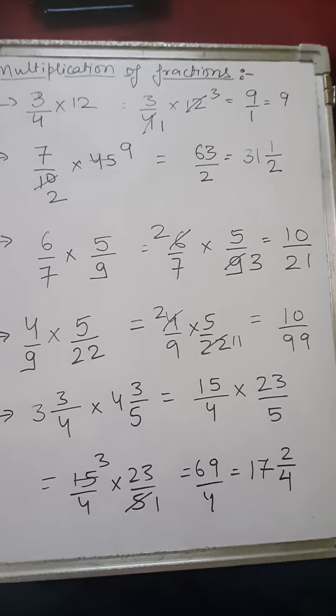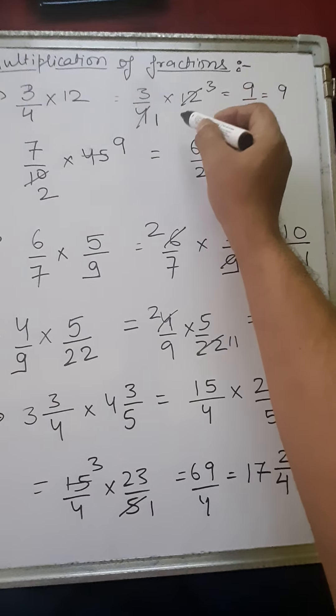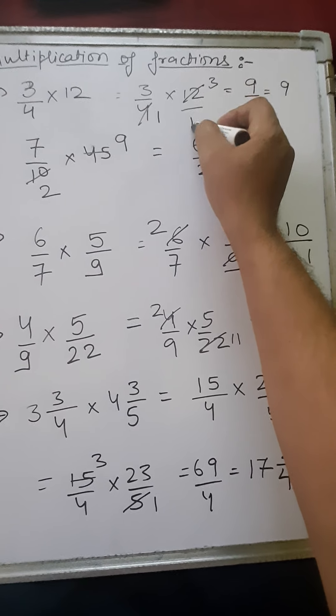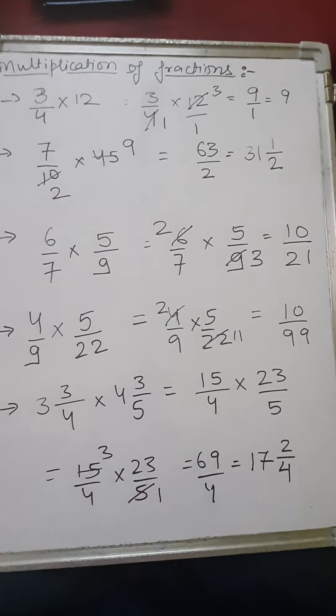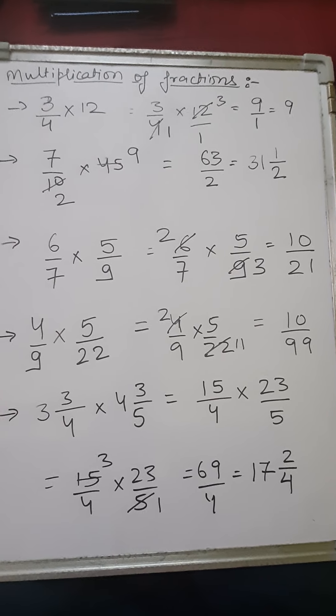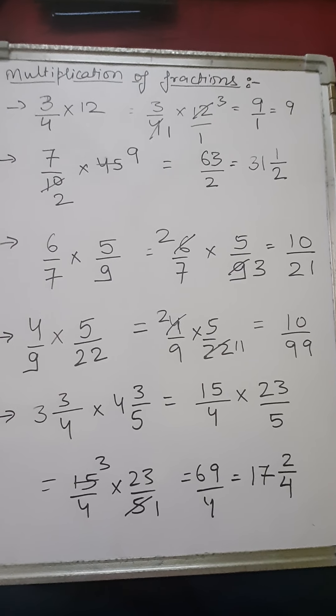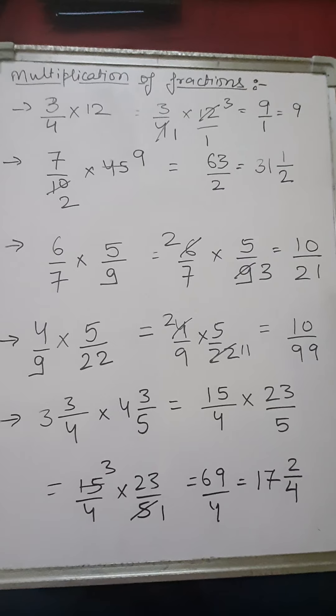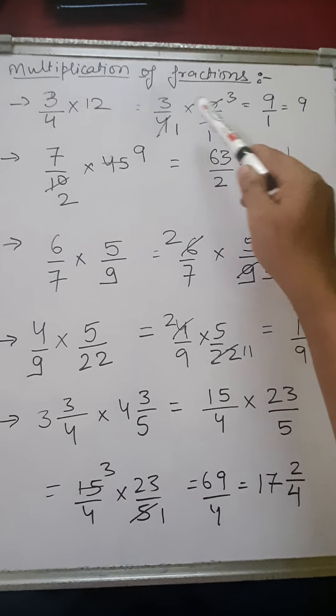That means 1 is there in the denominator, so you can see that you can cancel this 12 by 4. Whenever any fraction is written, that means 3 by 4 into 12 written, that means 12 upon 1 written. This 12 is multiplied to the 3 and this 1 is multiplied to the 4.